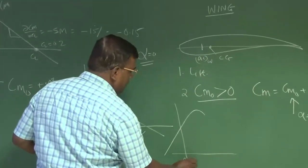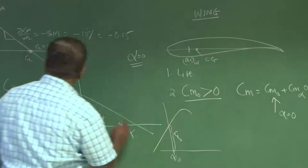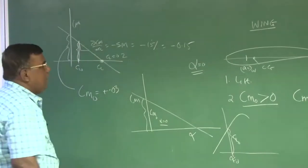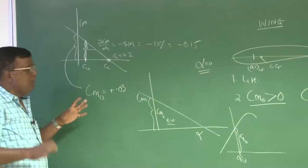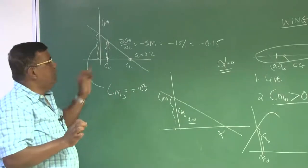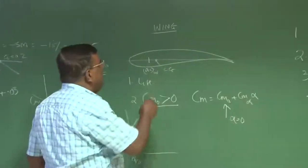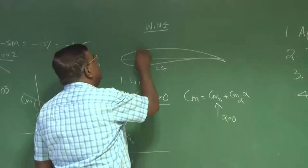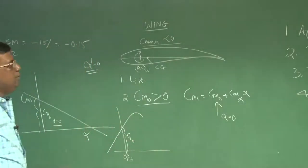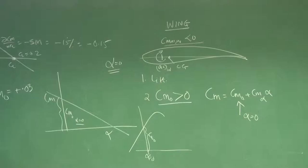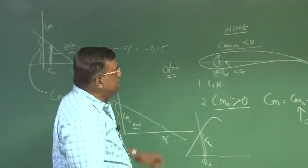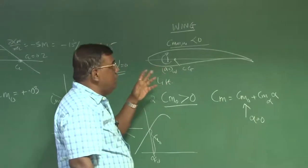That means I'm looking for Cm versus alpha, but this is Cm0 at alpha equal to 0. Generally it is easier to visualize this. You can get the same information from here. So at alpha equal to 0, you see what is the Cl. If it is a cambered airfoil, you can always see at alpha equal to 0 what is the Cl, that is Cl0. You pick that Cl0 point. This becomes your Cm at alpha equal to 0. The first approximation is all the lift is coming from the wing. It is the conceptual stage, that is why we are doing all these approximations.